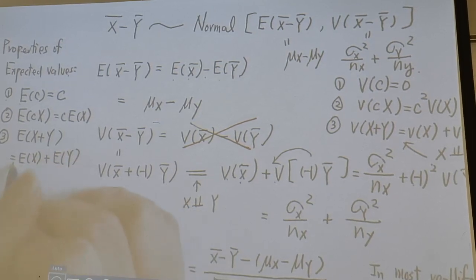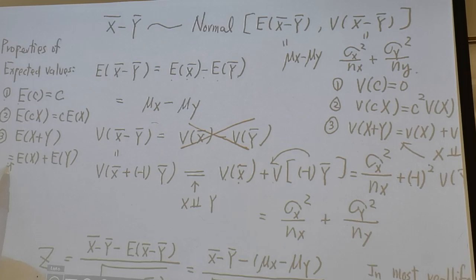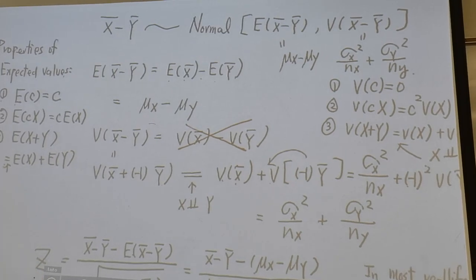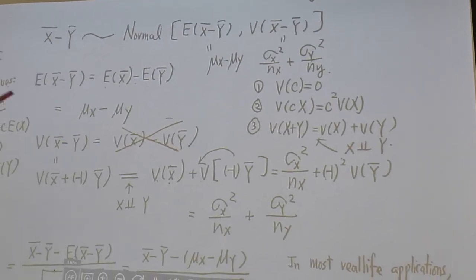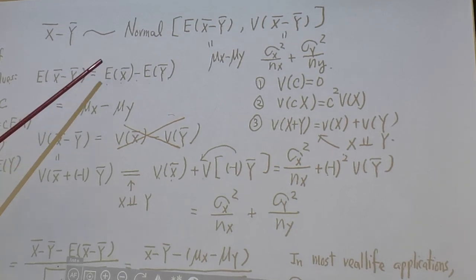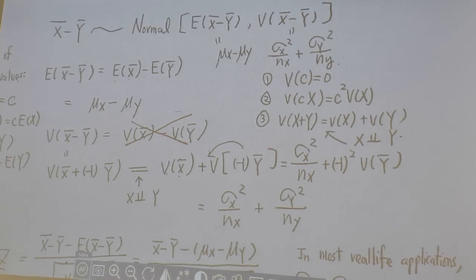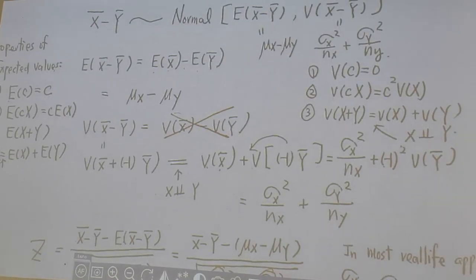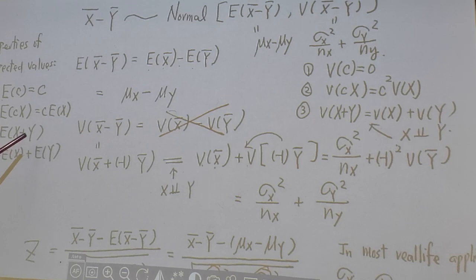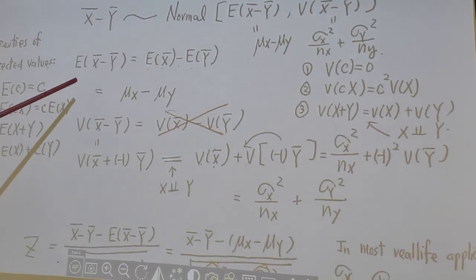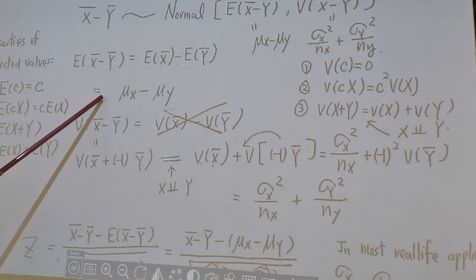Do we need to have independent here? Independent is not required. For expected value, this is not required, but it will be required for variance. So let's look at expected value of x-bar minus y-bar is expected value of x-bar minus expected value of y-bar. Now, by using property three, expected value of x minus y is E x minus E y. Property three. So the expected value of x-bar minus y-bar is equal to E x-bar minus E y-bar, which is mu x minus mu y.